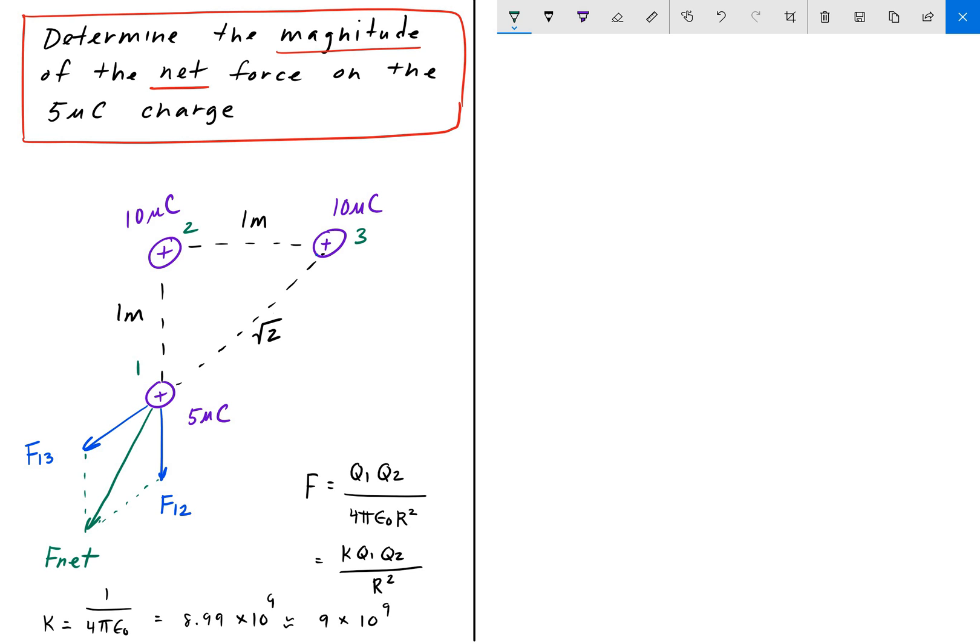And we want to determine the magnitude of F net. And the way we would do that is we find the force F12 and the force F13. We break them up into their individual x and y components, add up their components, and then find the magnitude of F net.